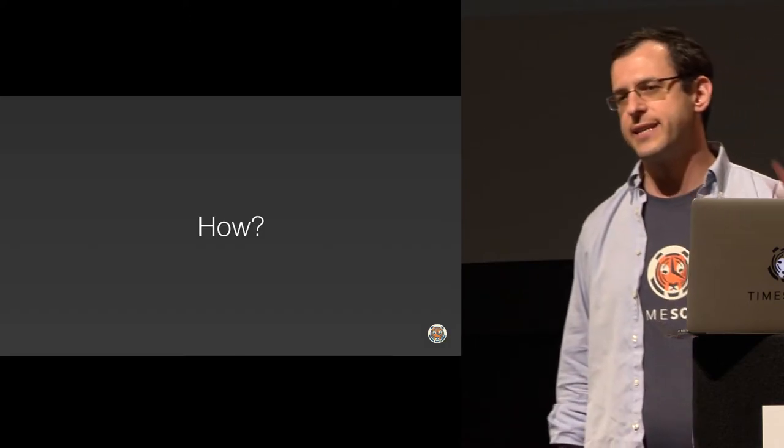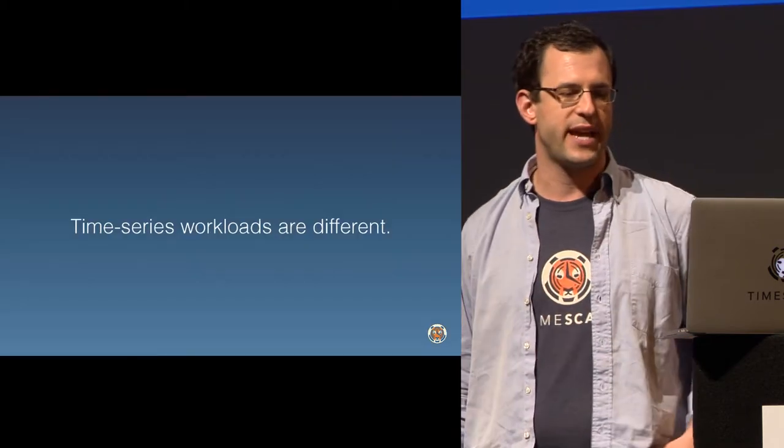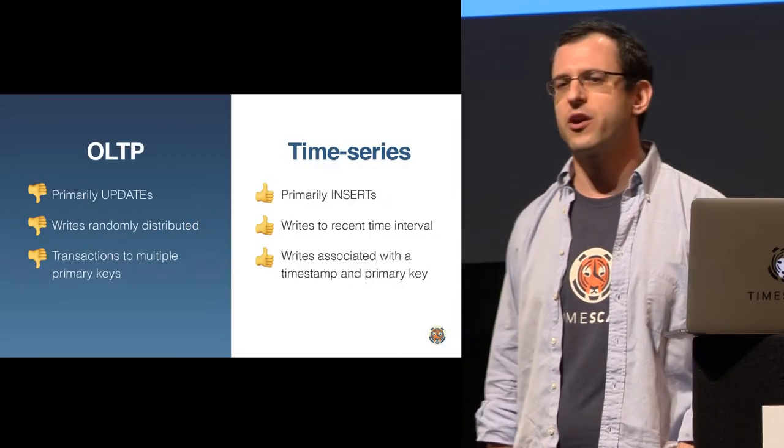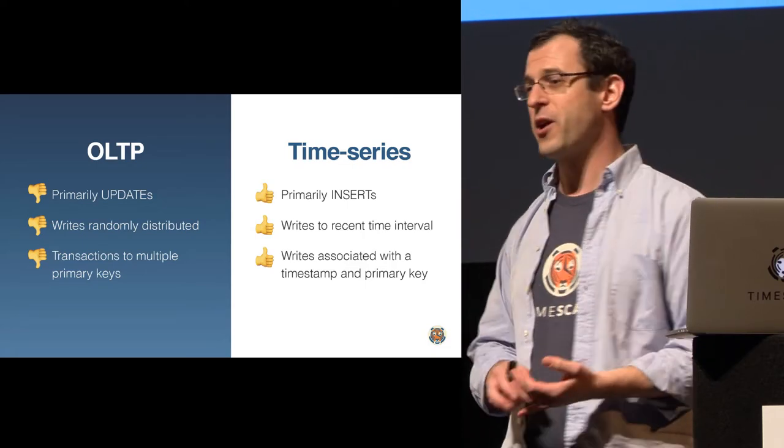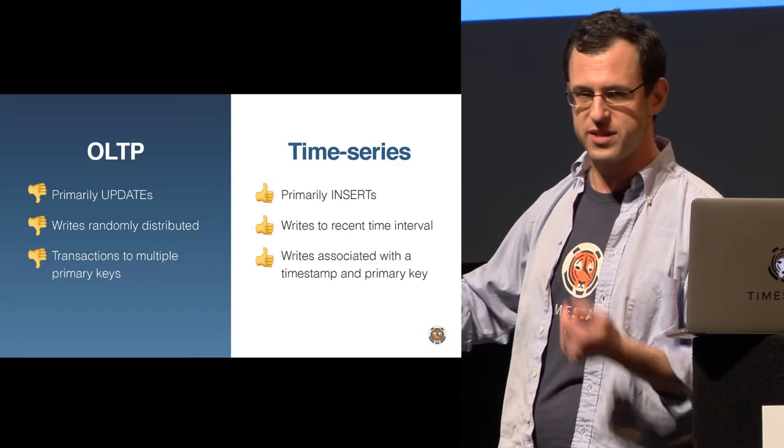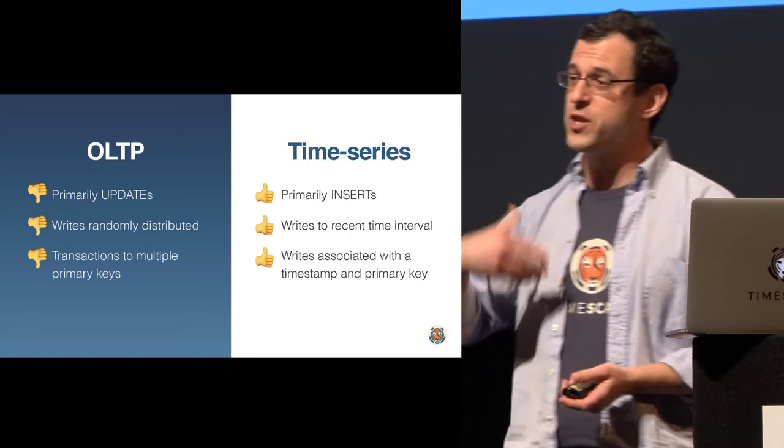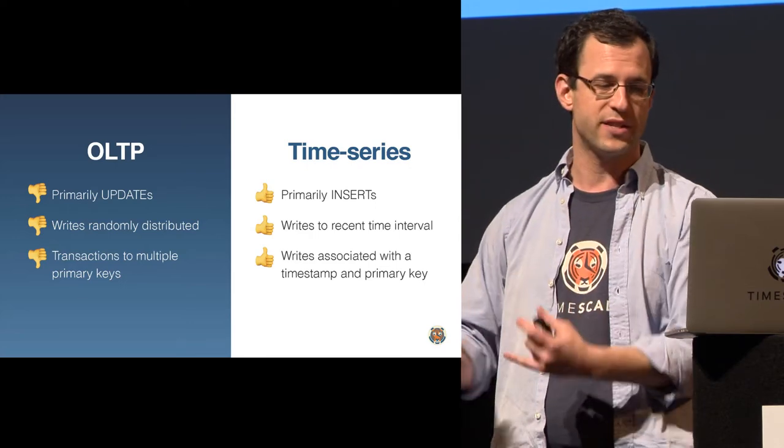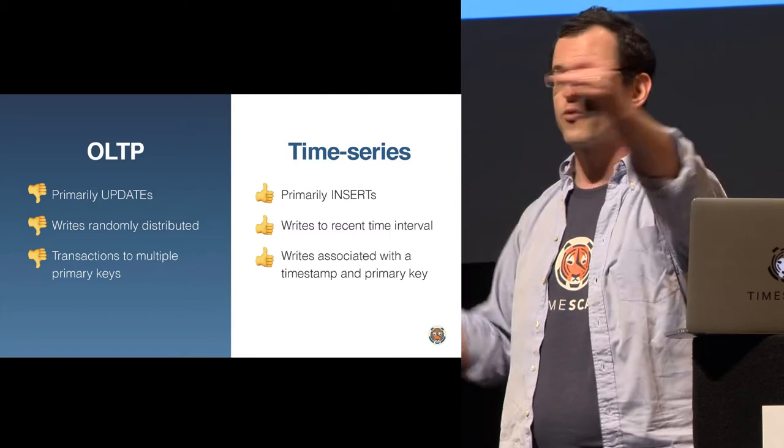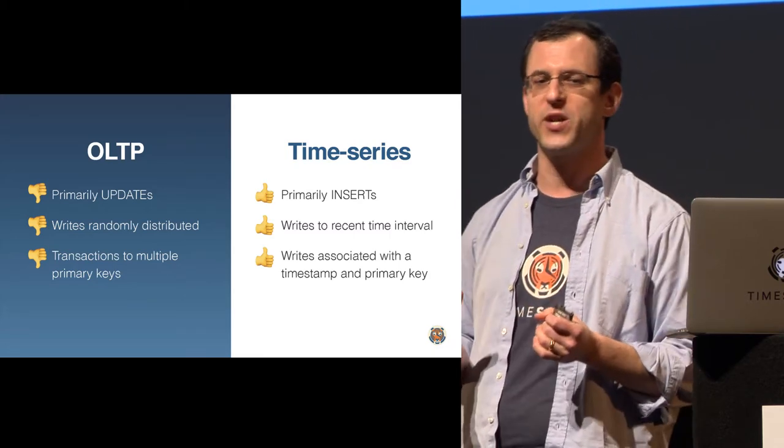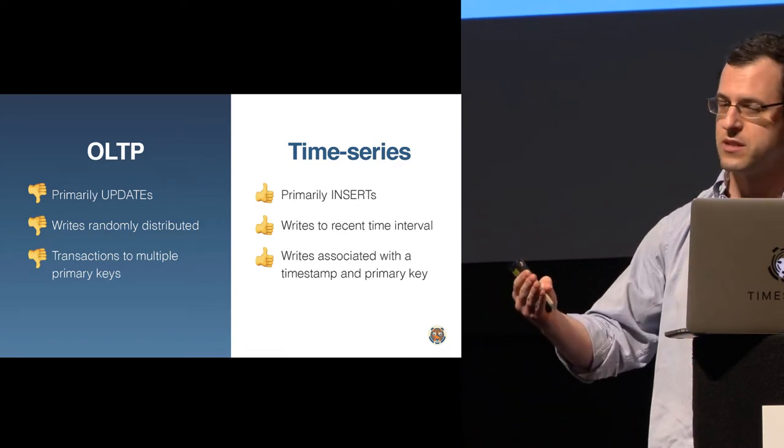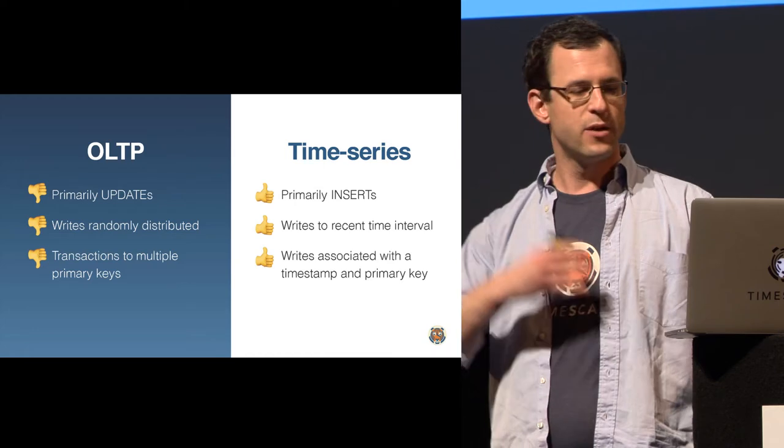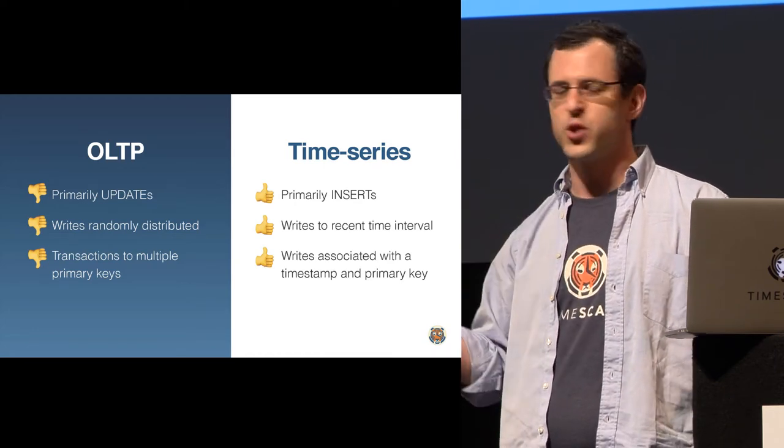The big question is, how do we take an existing database like Postgres and make it scalable for time series data? The key insight is that time series workloads are actually a different problem than traditional OLTP workloads. In traditional transactional workloads, you primarily have updates. Bank of America has 50 million customers. That number is not that big. But you exchange money between accounts. Primary updates, the writes are randomly distributed. You're touching random user IDs.